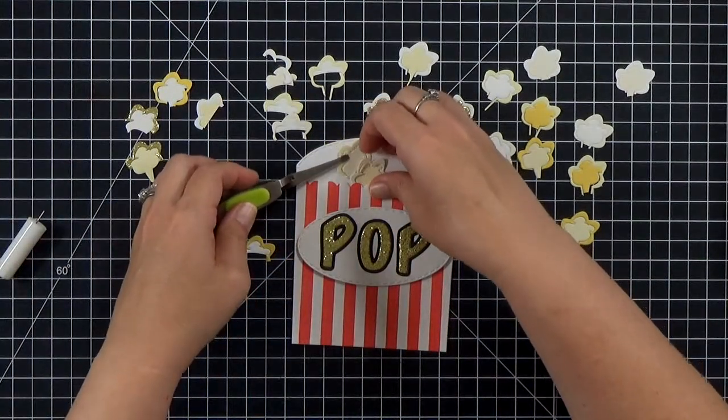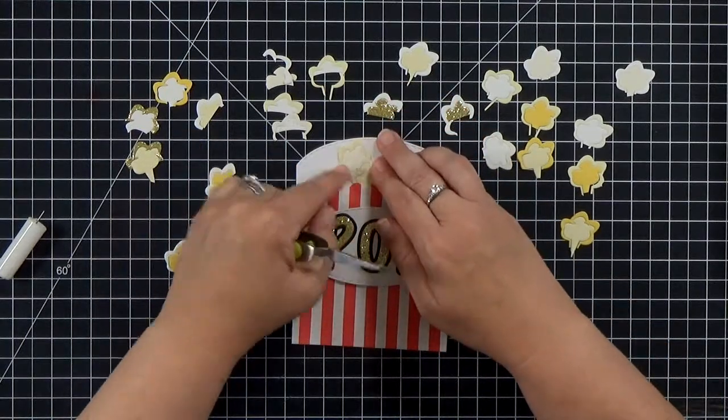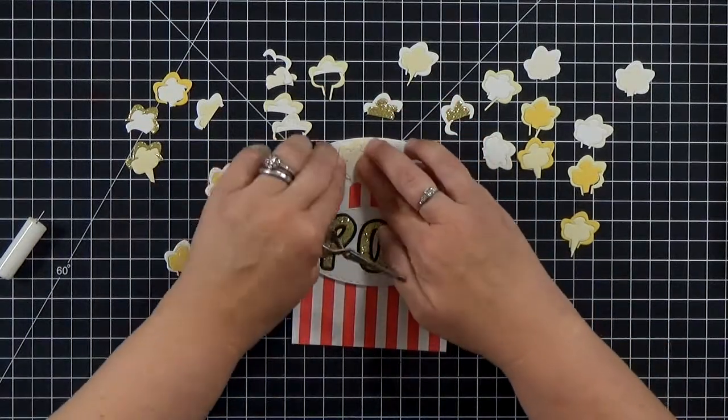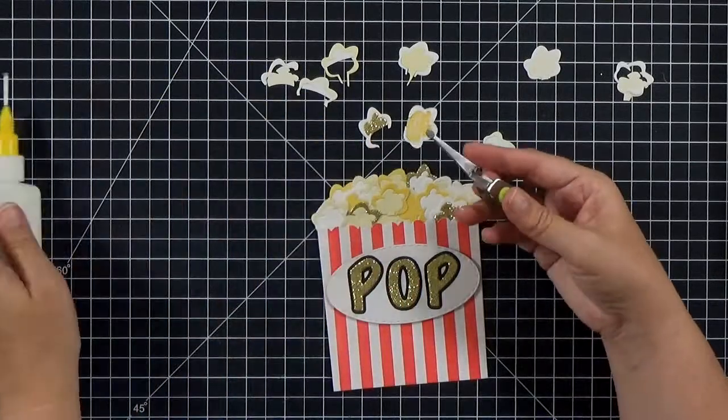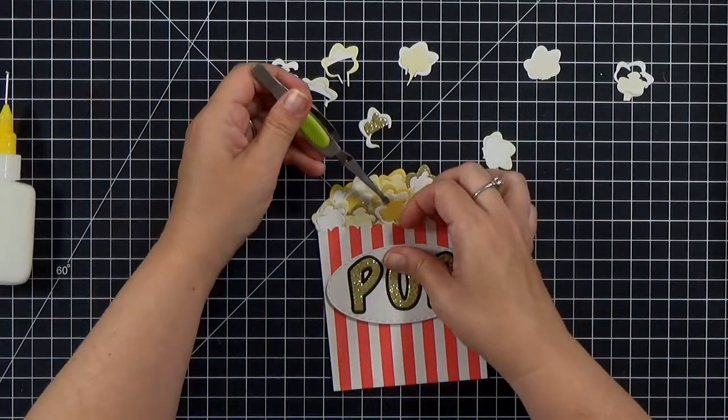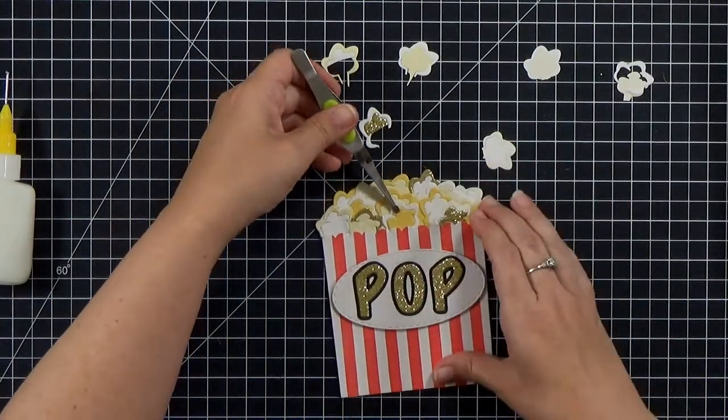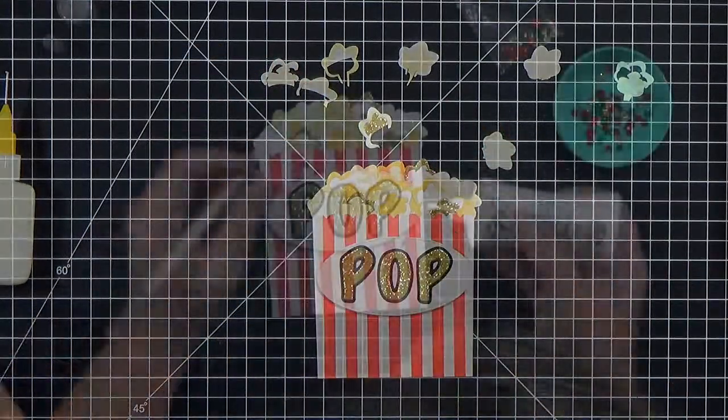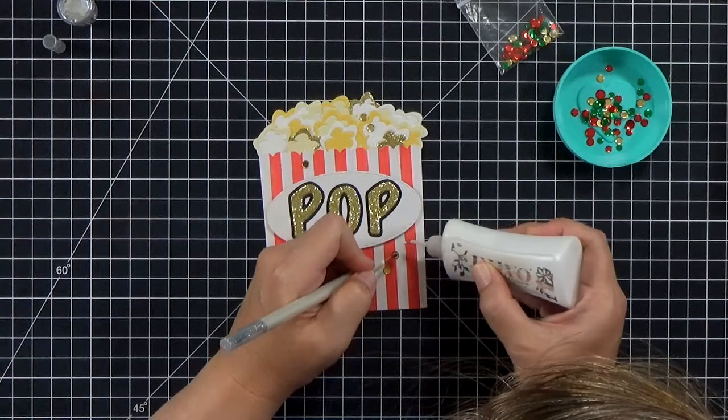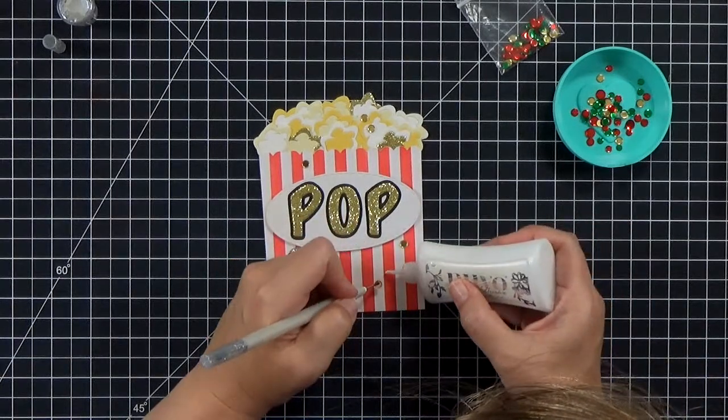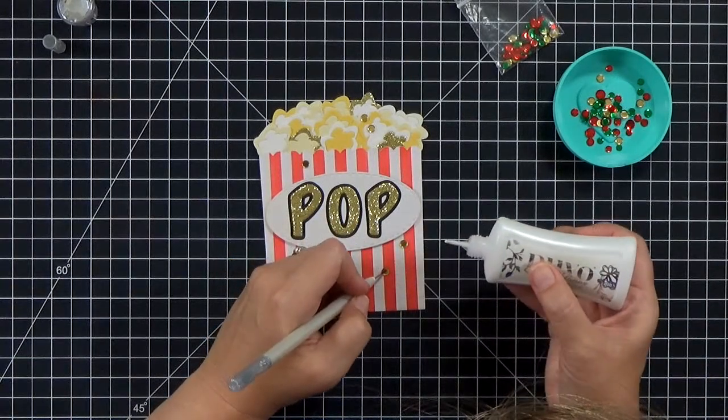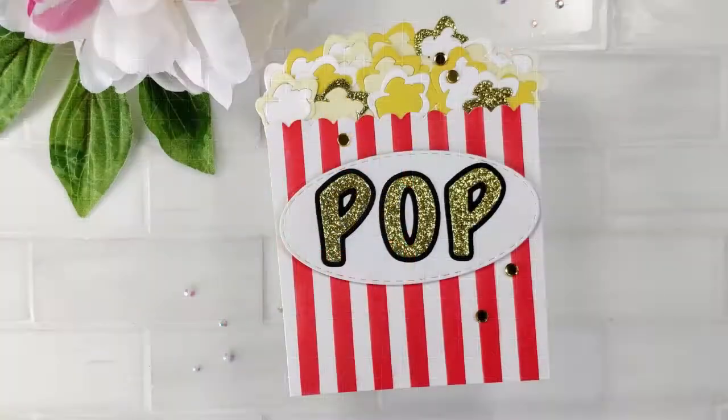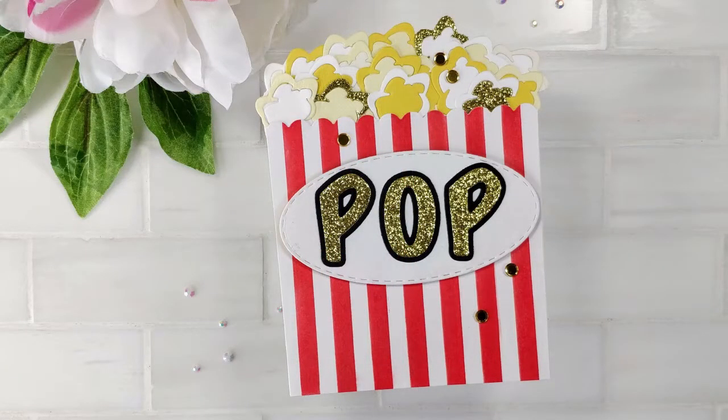So I went ahead and I just stuck them down. I did discover that it was easier to kind of start at the top and then work my way down. So you have less overlapping. It worked better that way. And then I just finished it off with a few gold sequins. I didn't want to go too crazy, but a few pops of that gold sparkle I thought was a lot of fun.